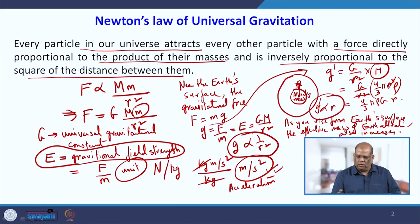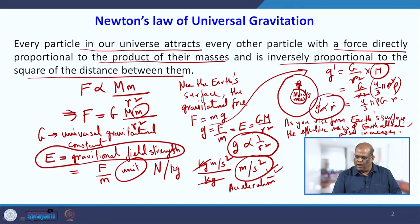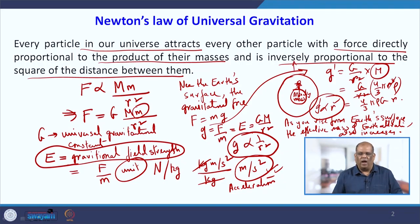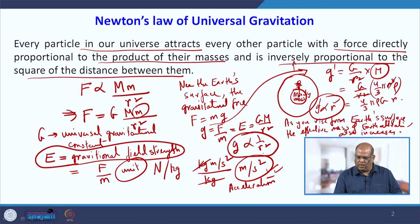The take-home message is that inside the Earth's surface, if a body moves away from the center, gravity varies linearly with distance. On the surface and above, it follows the inverse square law, varying as 1/r².